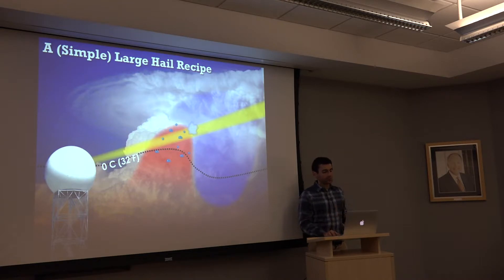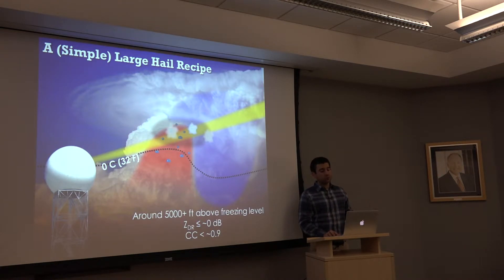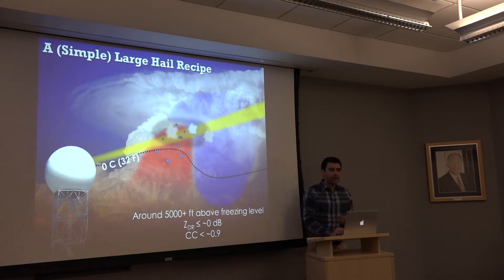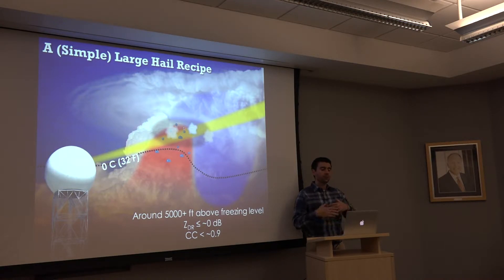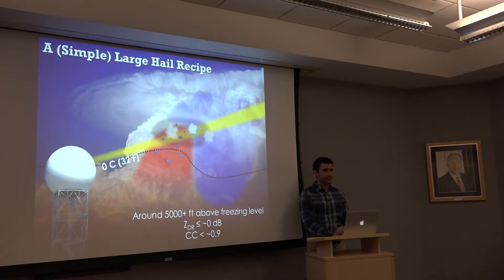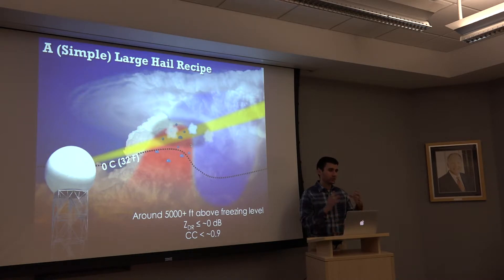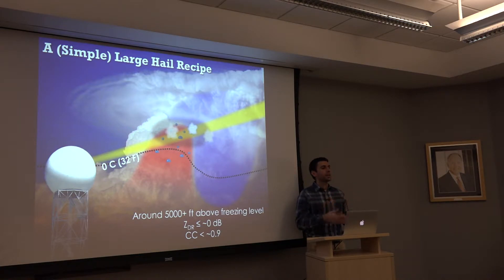We send our radar signal through larger hailstones with spikes and lobes on them. Looking around 5,000 feet plus above the freezing level, we see an area with ZDR typically close to 0 dB — you can even see slightly negative values due to electromagnetic scattering. Correlation coefficient is frequently reduced to 0.9 or even lower when really large hailstones are growing or collecting a lot of water in a wet growth regime within an updraft.